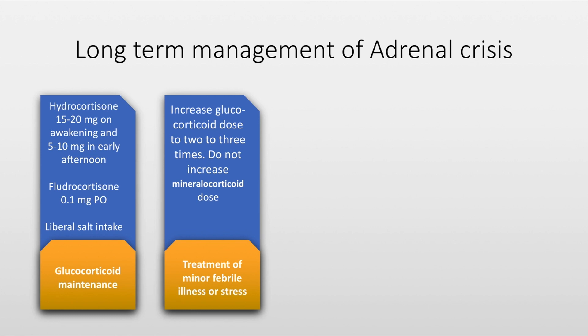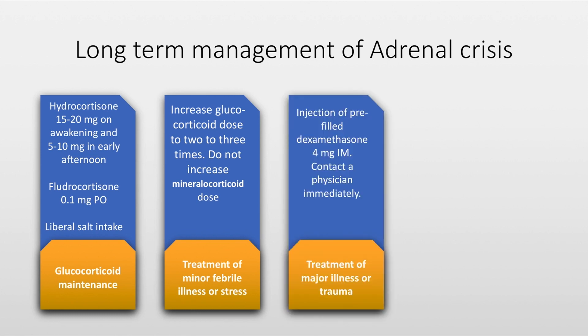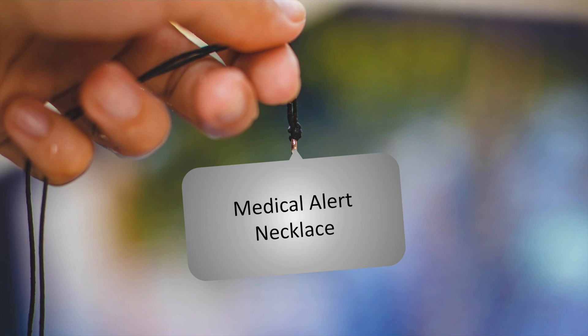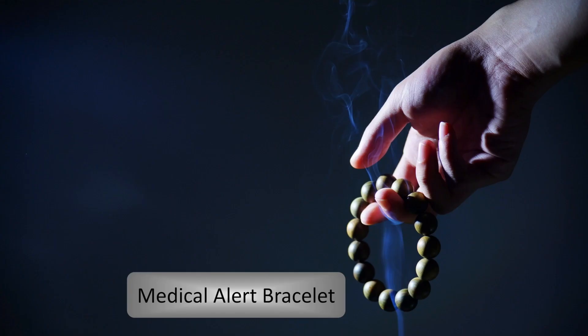This is called stress dosing. If there is major illness or trauma, the patient must inject pre-filled dexamethasone 4 milligrams intramuscularly and contact a physician immediately. During surgery, we must give the patient 100 milligrams of hydrocortisone intravenously three times a day and taper to the usual dose by halving the dose every day. Finally, all patients with Addison's disease must have a medical alert necklace or bracelet. That's it for our presentation on Addison's disease. We will see you in the next video.